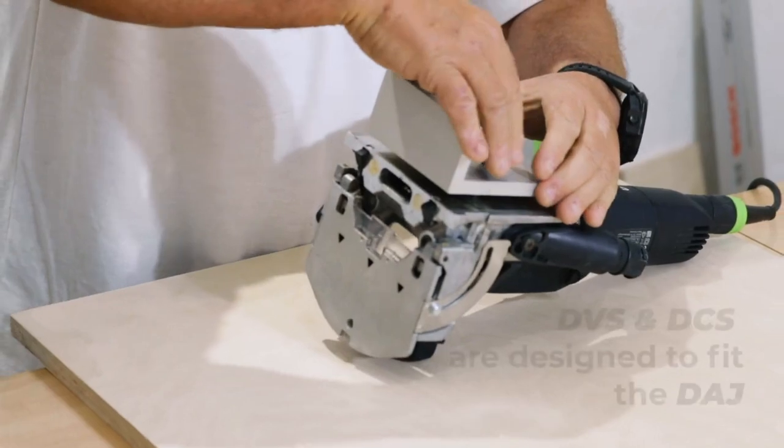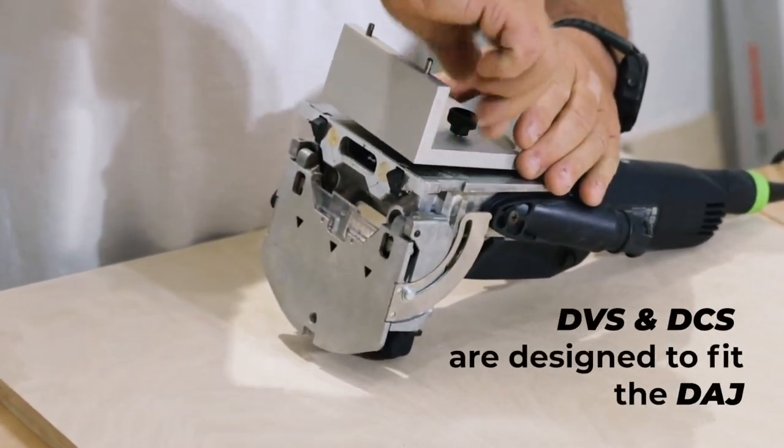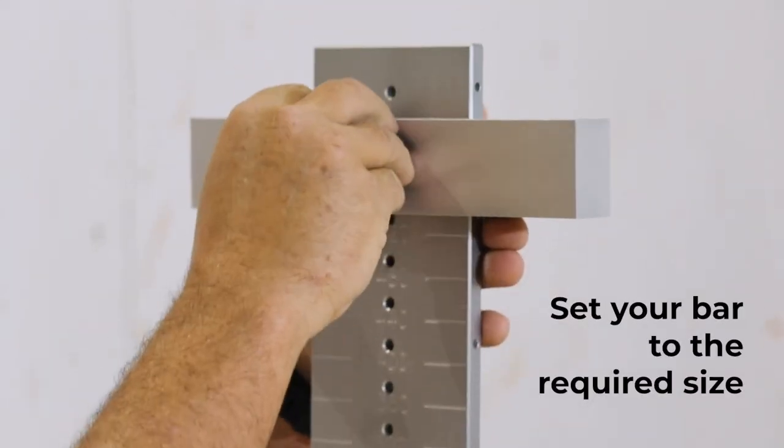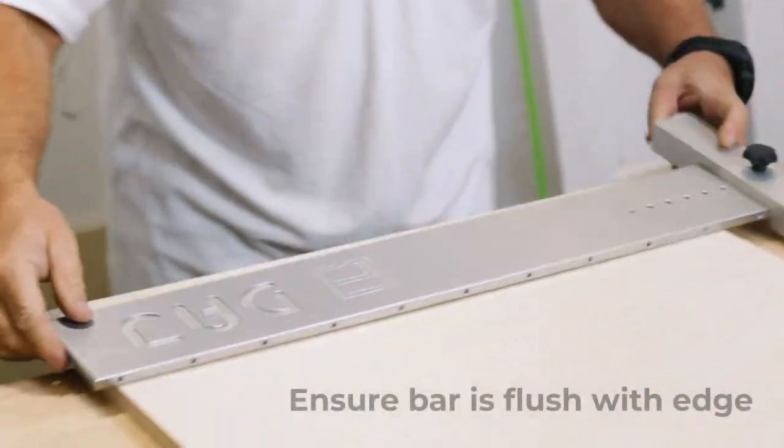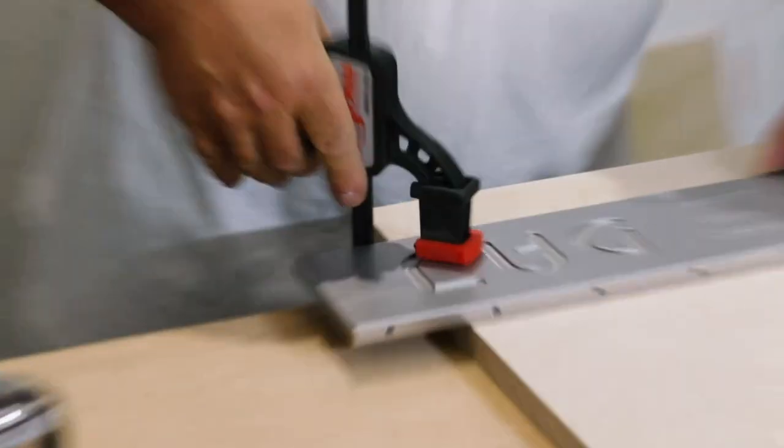The new DCS and DVS plates are designed to work with the Domino Alignment Jig. Set your bar to the required size, ensure the bar is flush with the edge, and clamp into position.